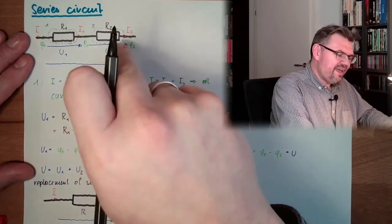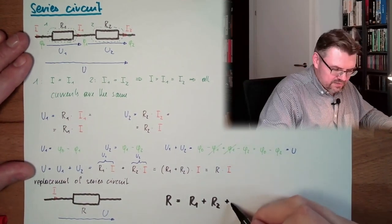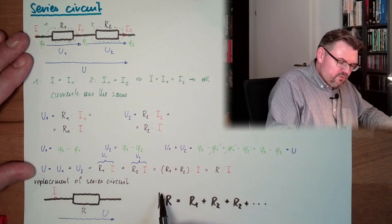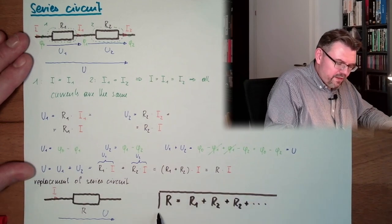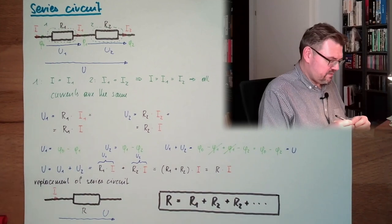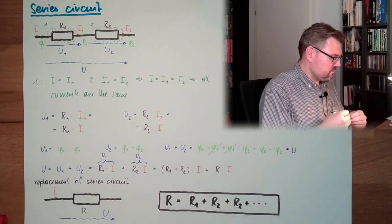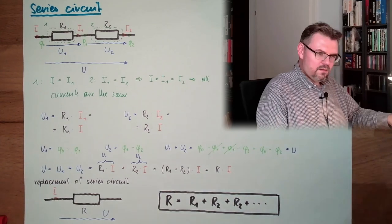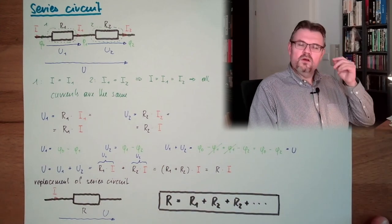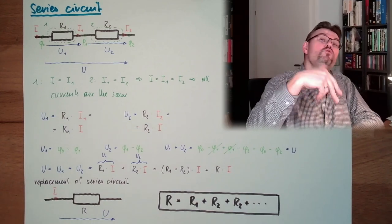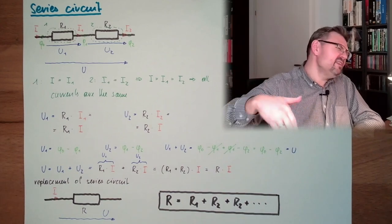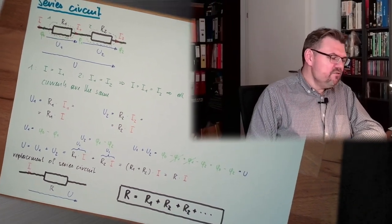And if we would extend this to more than two resistors, plus R3 plus and so on. This is the substitution value of a substitution resistor in a series connection, in a series circuit. For calculating this network, we can say it's behaving like those two would be together and we simply have to build the sum. If it's three in a row, we build the sum of three. If it's 10 in a row, we build the sum of 10.